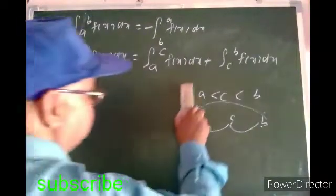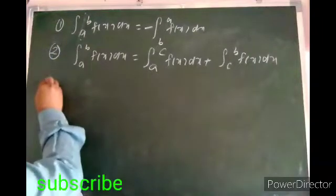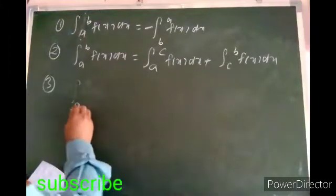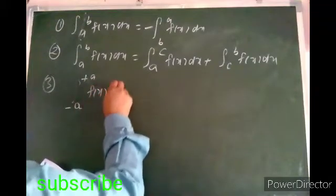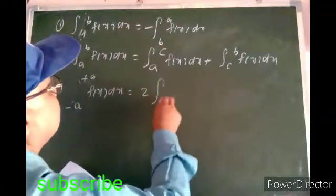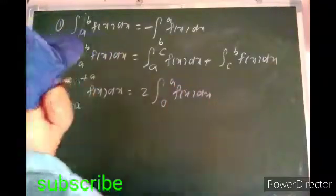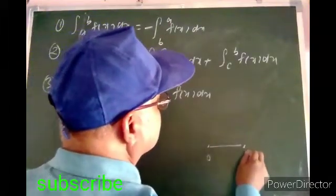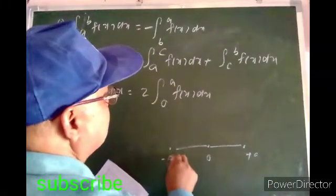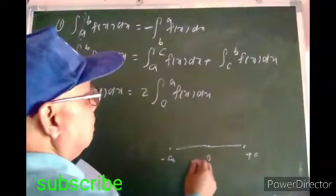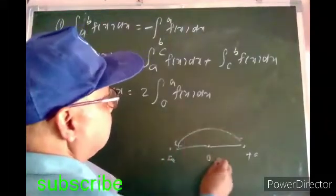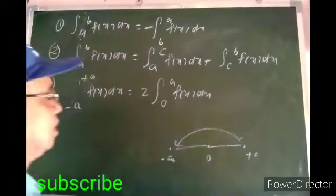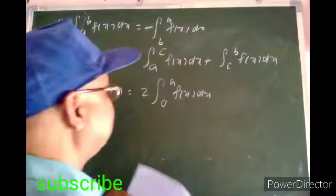The third property is: from minus A to plus A, f(x) dx is equal to two times from 0 to A, f(x) dx. The middle point is 0; A and minus A are at equal distance from zero. Taking the integral from minus A to plus A, we can take the interval from 0 to A and it will be doubled. But this is only for even functions.